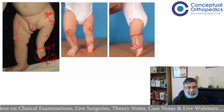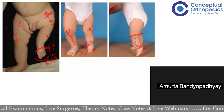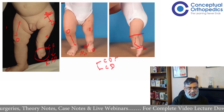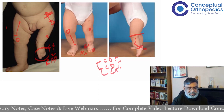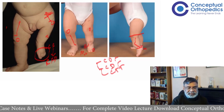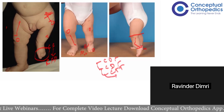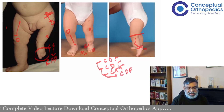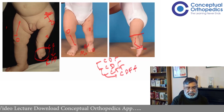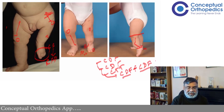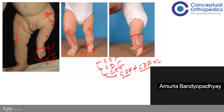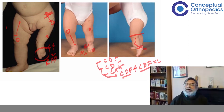An important point: congenital deficiency of the femur is quite often associated with congenital deficiency of the fibula - CFD plus CFibD together. Do you know how common this association is? The student didn't know the exact percentage, so the instructor invited a guess.